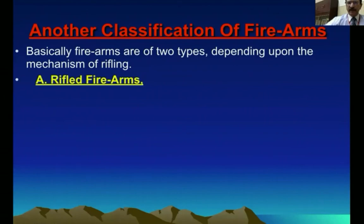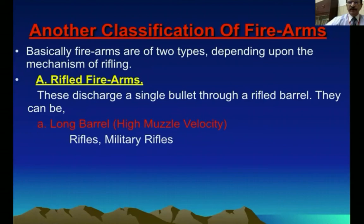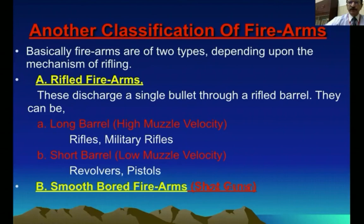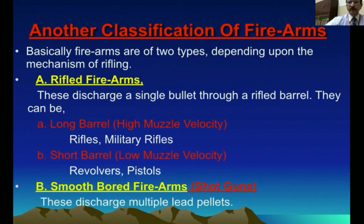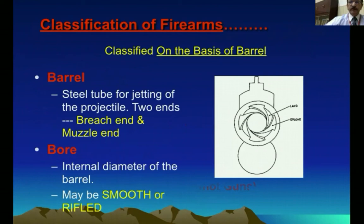Another important classification: weapons may be rifled or smooth bore. Rifled firearms have the inside of the barrel rifled, and can be long barrel with high velocity — military rifles — or short barrel, low velocity. Smooth bore weapons have an unrifled barrel. In rifled weapons, bullets are used, whereas in smooth bore weapons, pellets are used. On the basis of rifling, we divide weapons into smooth bore and rifled.